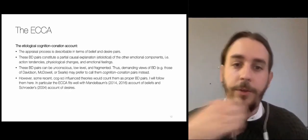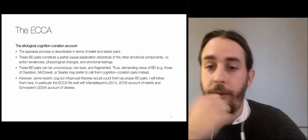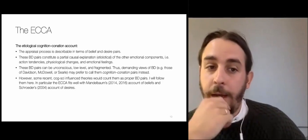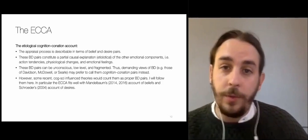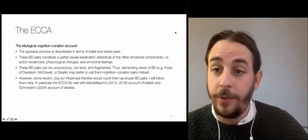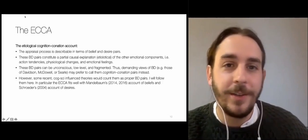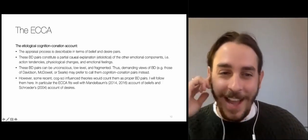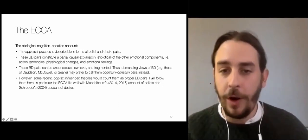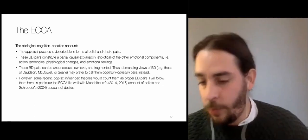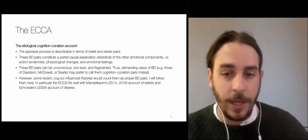Some recent cognitive influence theories would count the relevant states as proper belief-desire pairs, and the EKA fits well in particular with Eric Margolis's 1987 account of belief and Tim Schroeder's account of desires. Other accounts could be made to work as well, but I think the EKA fits particularly well with these two accounts.